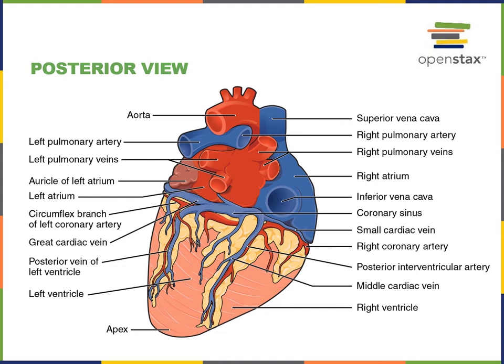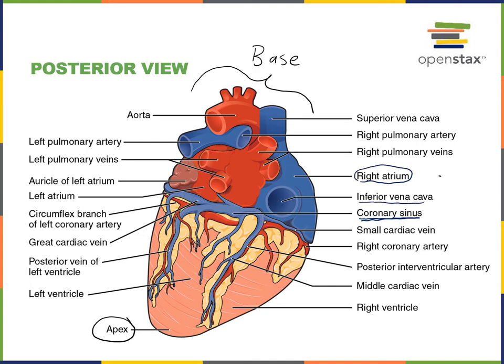This illustration shows a posterior view of the heart. We can see the blood vessels attached at the superior region, which is the base of the heart. The apex of the heart is the pointed region pointing inferiorly and to the left. In the posterior view we can see the coronary sinus, which drains deoxygenated blood from the coronary circuit back into the right atrium. So the inferior vena cava, superior vena cava, and coronary sinus are the veins that return deoxygenated blood to the right atrium.